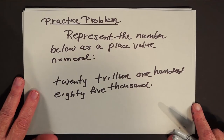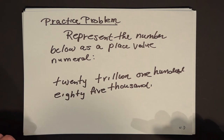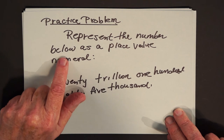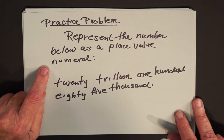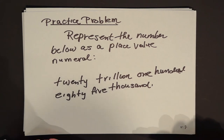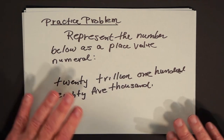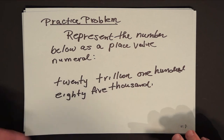Let's come to our practice problem of the day — something that kids and a lot of people have trouble with. Represent the number below as a place value numeral. The number is 20,185,000. Pause the video, write down what you think the answer is, and then I'll show you how I did the problem.